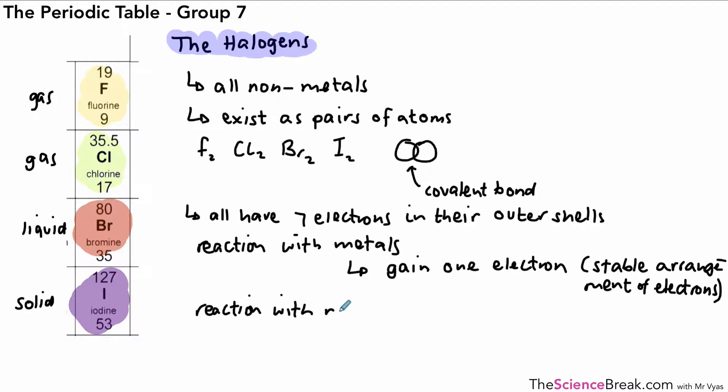When they react with non-metals, they share one pair of electrons. So they don't gain electrons, they share one pair of electrons and that will help to give it a stable arrangement. That's usually to do with covalent bonds. So five key things here that we've got to know and remember about the halogens.